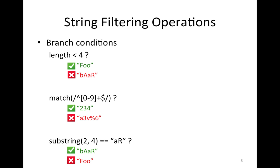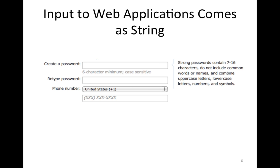When we talk about input validation in web applications, it's done usually using the branch conditions, so it just blocks the inputs without changing them. Why are we considering strings? Because the input to web applications comes as strings — it comes from HTML input fields. Even if the field is supposed to give you a number, you will still get it as a string, and then the web application needs to parse this string into a number.